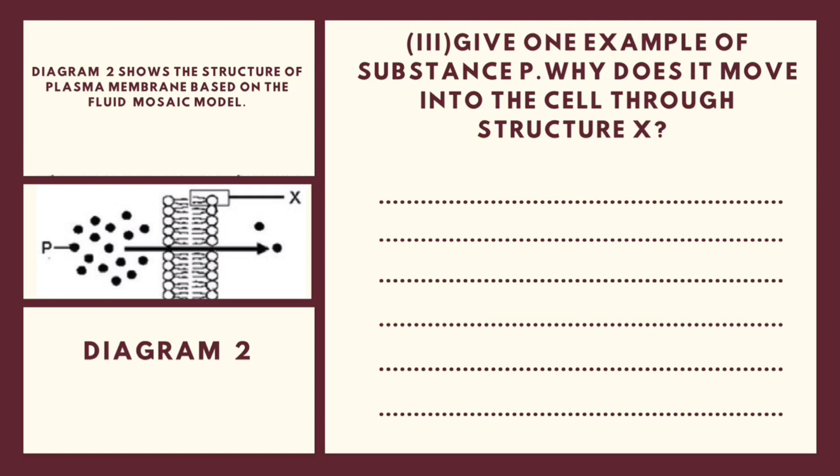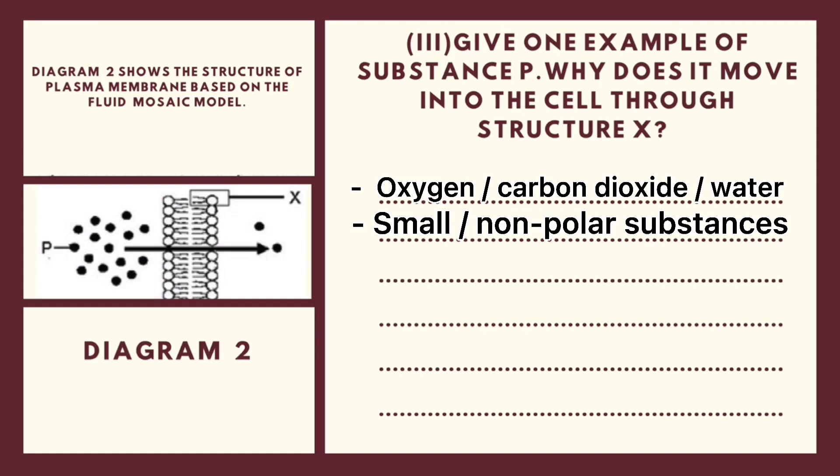The third question, give one example of substance P. Why does it move into the cell through structure X? Okay, let's look on the structure P. Structure P can move into the cell through structure X easily. So, the answer is, for the example of substance P, you can answer either oxygen, carbon dioxide or water. Why? Because oxygen, carbon dioxide and water is a small substance and non-polar substance. So, this substance can move into the cell through structure X easily.